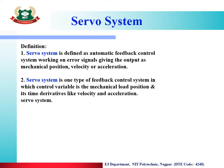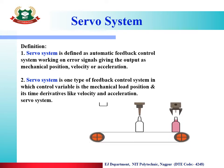An example of servo system is a conveyor belt — the belt keeps moving and bottles advance one by one, and the capping process takes place automatically. This shows that the motor is running automatically with the help of servo mechanism.